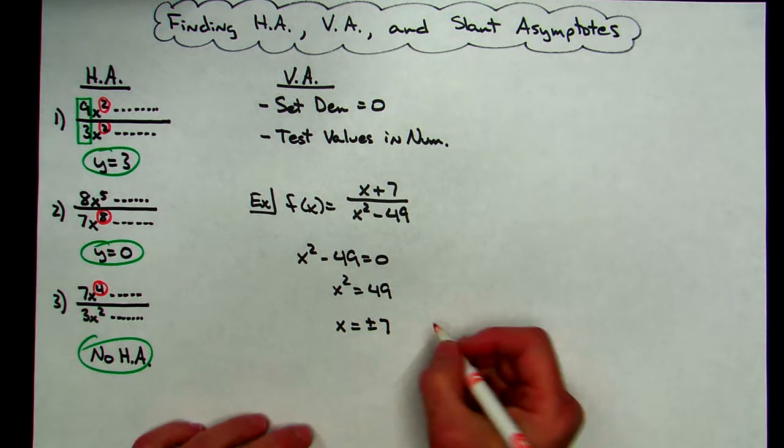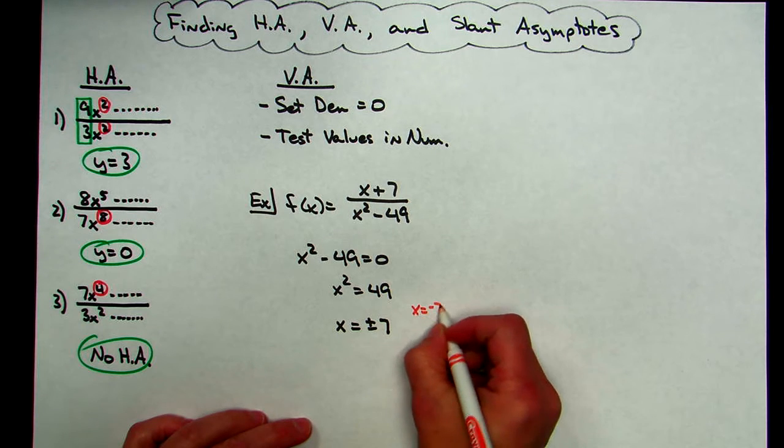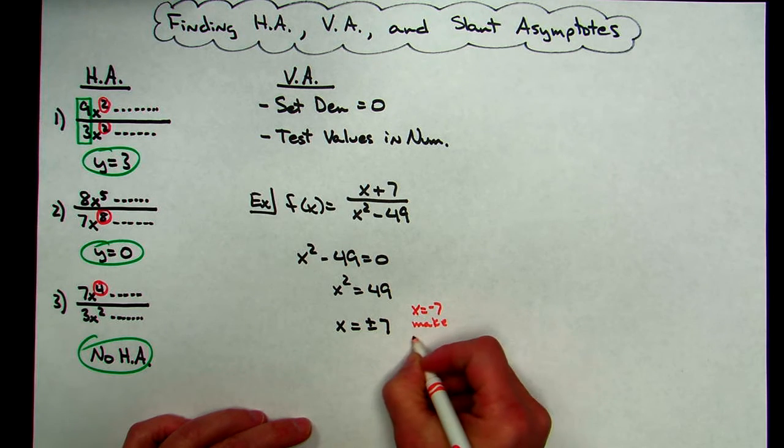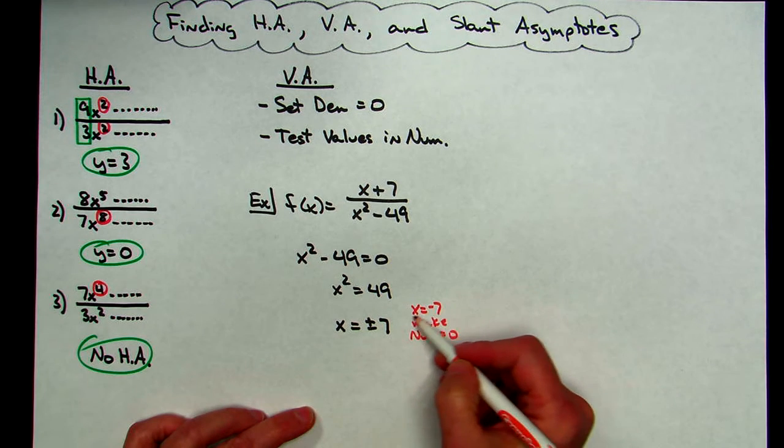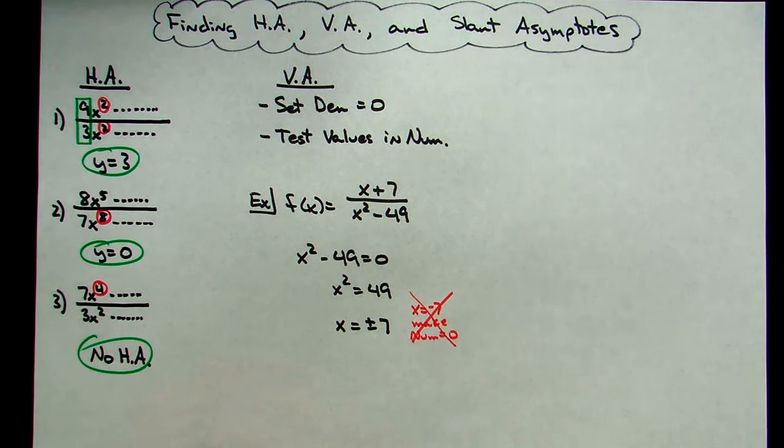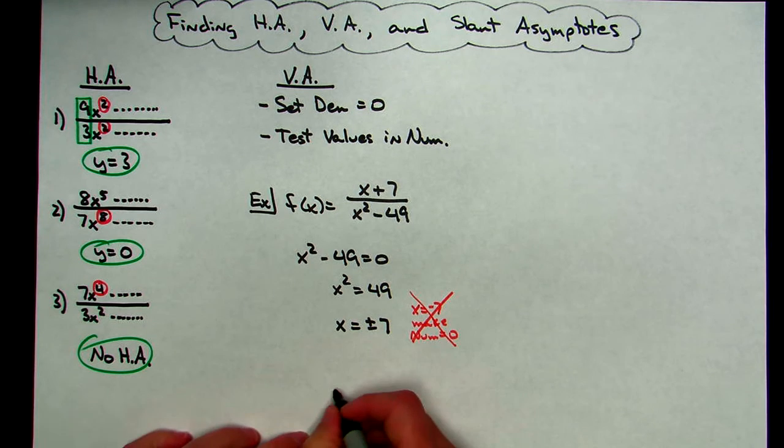So x equals negative 7 makes my numerator equal to 0, in which case x equals negative 7 is not a vertical asymptote. I'm going to throw it out. The only vertical asymptote I have left then is x equals 7.